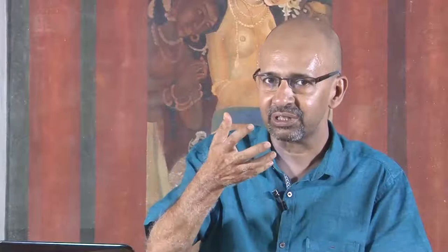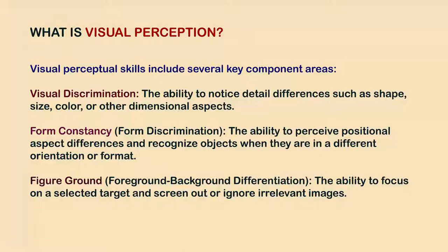A third important component area is figure-ground: the relationship between object and space, and the ability to focus on a selected target while screening out irrelevant images to make meaning. Visual perceptual skills also include spatial relationships — the ability to recognize and mentally measure the positioning of objects in space, estimating distance even from a far-away position.